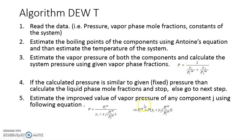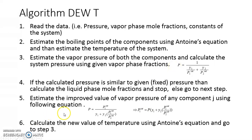To improve temperature in Dew T, we modify the equation to find a new P1_sat — again using the fixed system pressure, not the calculated one. y1 and y2 are fixed; P1_sat and P2_sat are from the previous step. This new P1_sat gives a new temperature via Antoine's equation, from which we get new P2_sat and a new P_calc. We repeat until P_calc and the fixed pressure are approximately equal, then calculate x1 and x2 using Raoult's law.